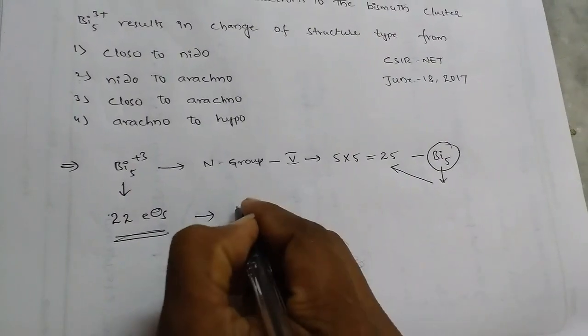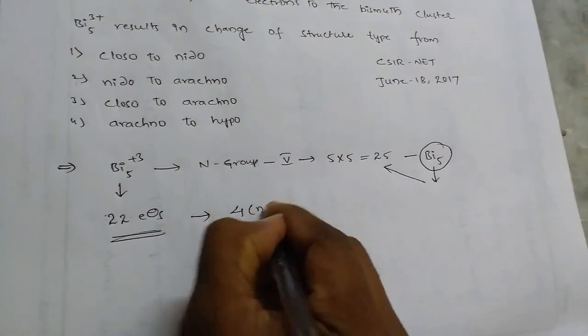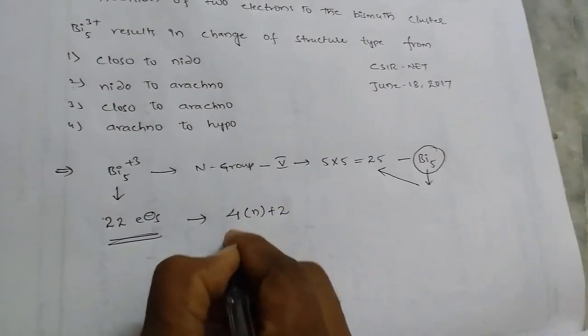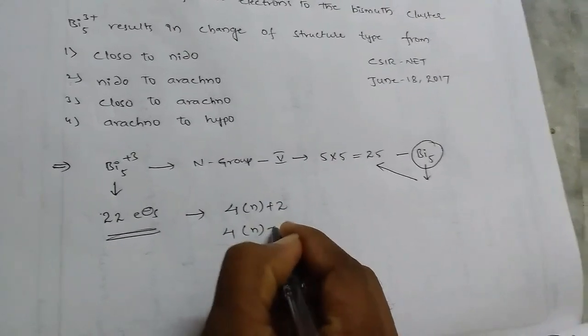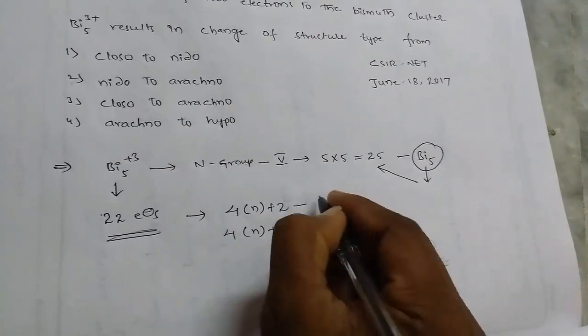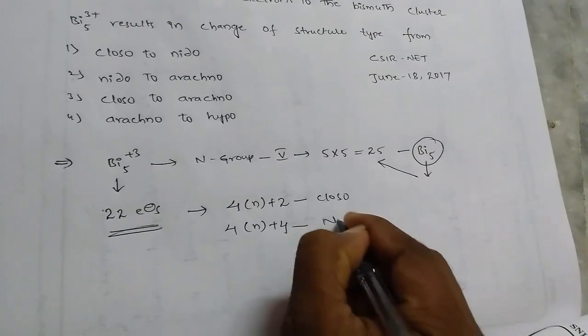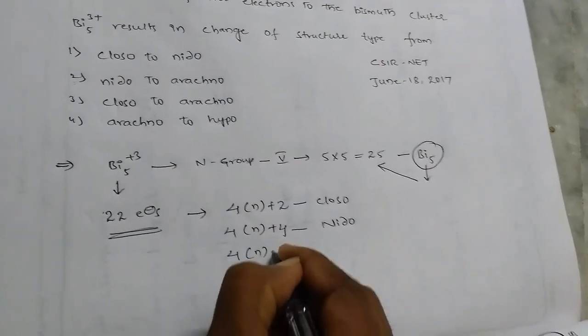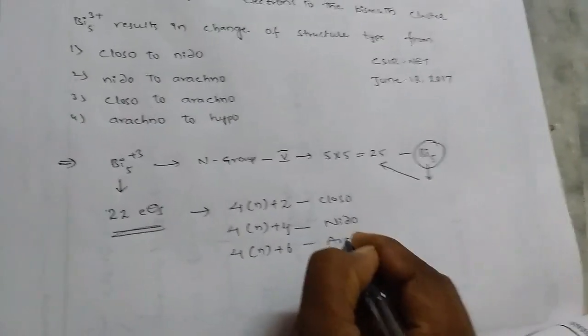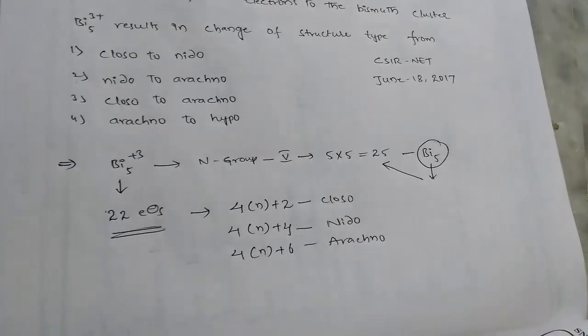If you observe, we have the formulas: 4n+2 is closo, 4n+4 is nido, and if we have 4n+6, that's arachno.